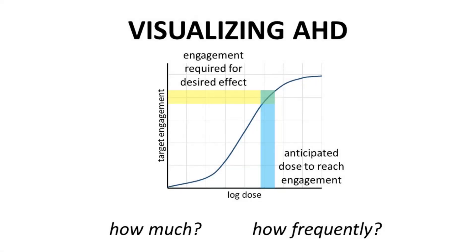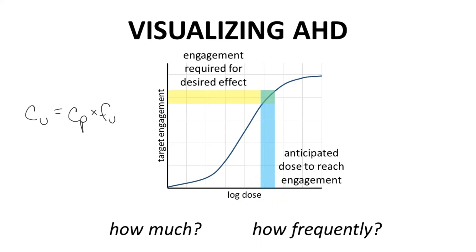Here is a graph that allows visualization of the anticipated human dose prediction. At the time of the prediction, the discovery team will understand the degree of target engagement required to achieve a desirable degree of effect. Target engagement is driven by the unbound concentration, CU, of the drug, which is the product of CP and unbound fraction. So target engagement arises from a threshold pooled CP value. This threshold required CP value can be extrapolated into a corresponding dose for the patient. Keep in mind that at this stage, human PK is undetermined, so the human dose predictions involve estimates based on available animal PK data.